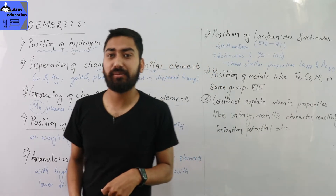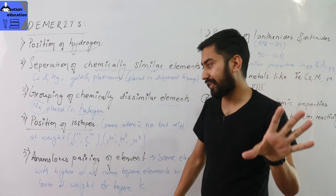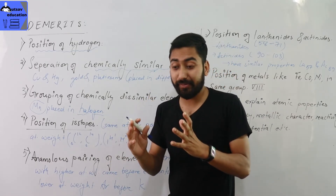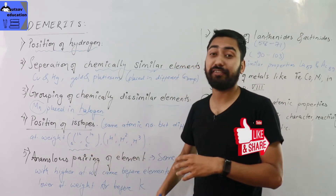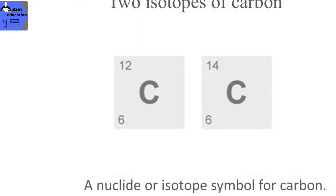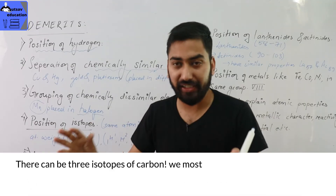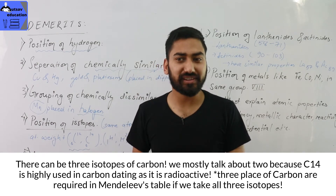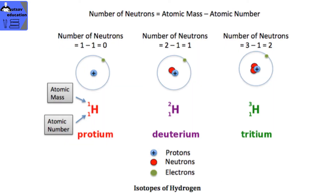Another demerit is the position of isotopes. Isotopes are elements with the same atomic number but different atomic masses. For example, Carbon has two isotopes: C-12 and C-14. Since Mendeleev's table was based on atomic mass, isotopes should occupy different positions, but they have the same chemical properties. So the position of isotopes is not clearly addressed in Mendeleev's Periodic Table.